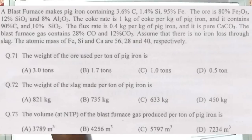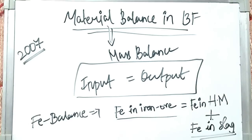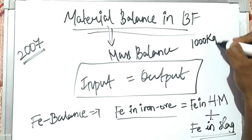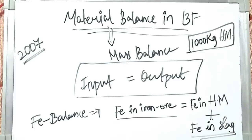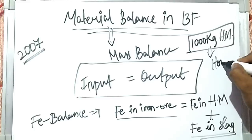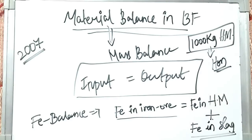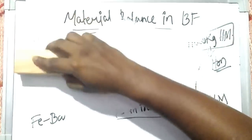In this video we'll take an example from the year 2007. Always remember, we generally assume that the calculations are done on the basis of 1000 kg of hot metal — that is, per one ton of hot metal. This is fixed; all these mass balance calculations are done on this basis.